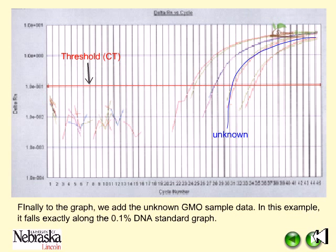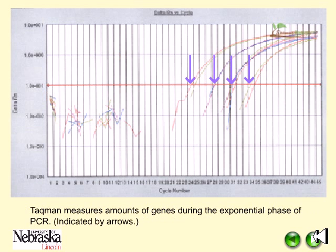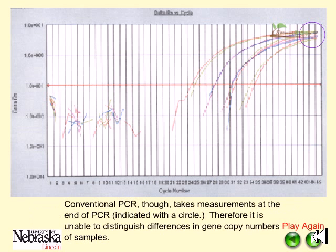Finally, we added an unknown GMO sample to the graph. In this example it falls exactly along with the 0.1% DNA standard graph. TaqMan measures the amount of gene during the exponential phase of the PCR, as indicated by the arrows. Conventional PCR makes measurements at the end of the PCR and therefore is unable to distinguish between the gene copy numbers of different samples.